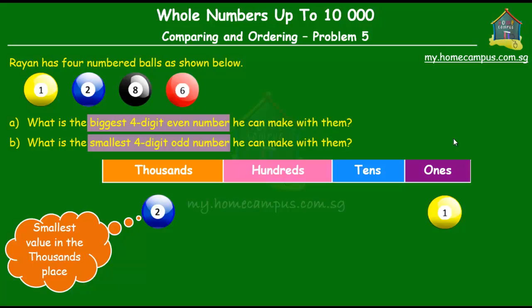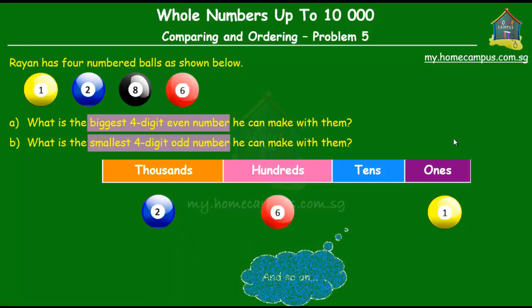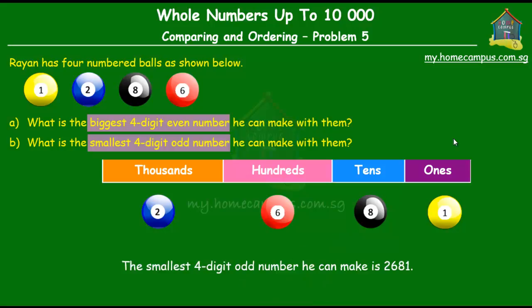So we put the number 2 ball in the thousands place, followed by the next smallest value in the hundreds place, and that would be the number 6 ball. And then what we have left is the number 8 ball which we will place in the tens place. So the smallest four-digit odd number that he can make with the four numbered balls would be 2,681.